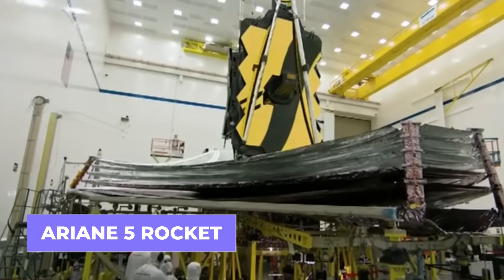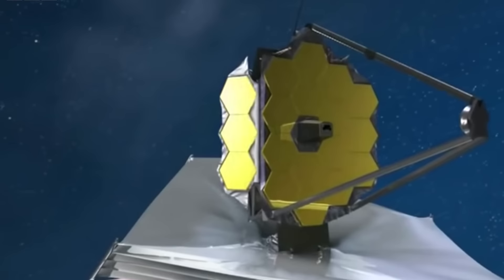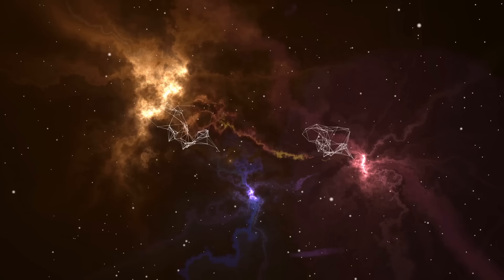The James Webb Space Telescope is a big science project that aims to answer important questions. It continues the work of other space telescopes and helps us learn how the first galaxies formed and what's out there in other parts of space.